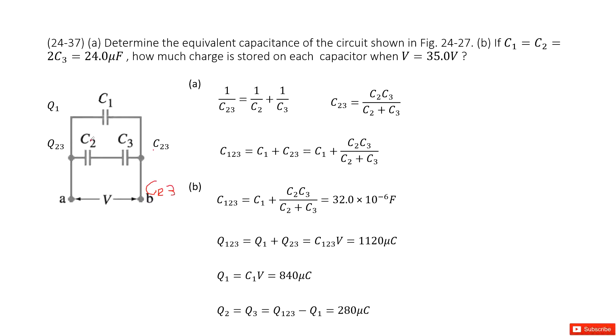So first of all, we can see C2, C3 series connection. The equivalent C23 must satisfy this equation. And then we convert this equation. We can get a function for C23 there. And then we find this capacitor C1 and C23 parallel connection. So the equivalent C123 is C1 plus C23. Input C23 inside. We can find the answer there. So part A is done.